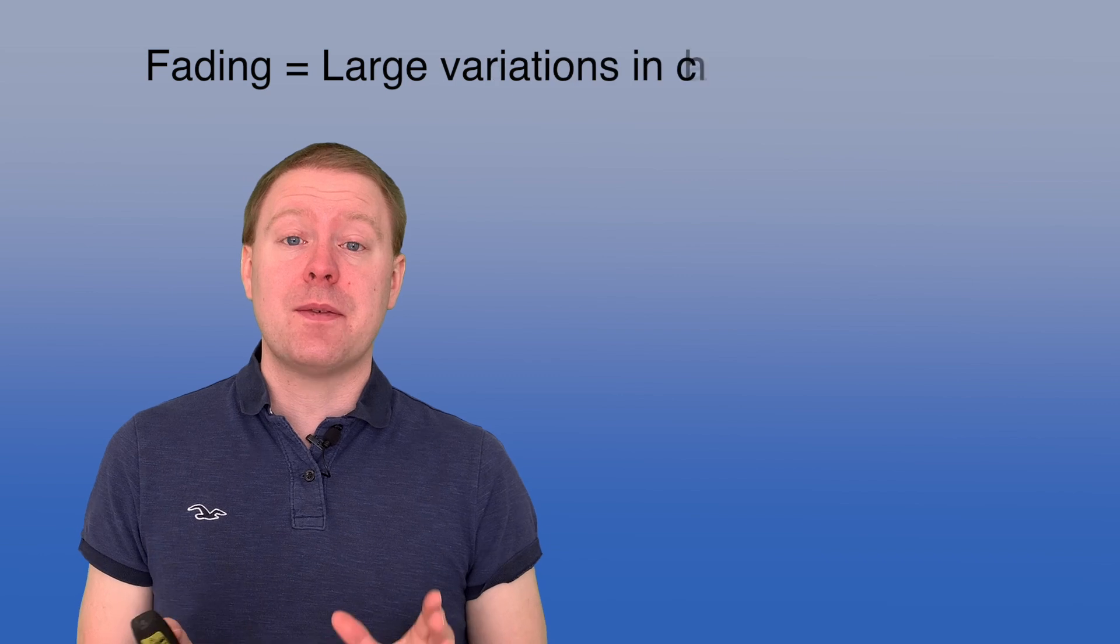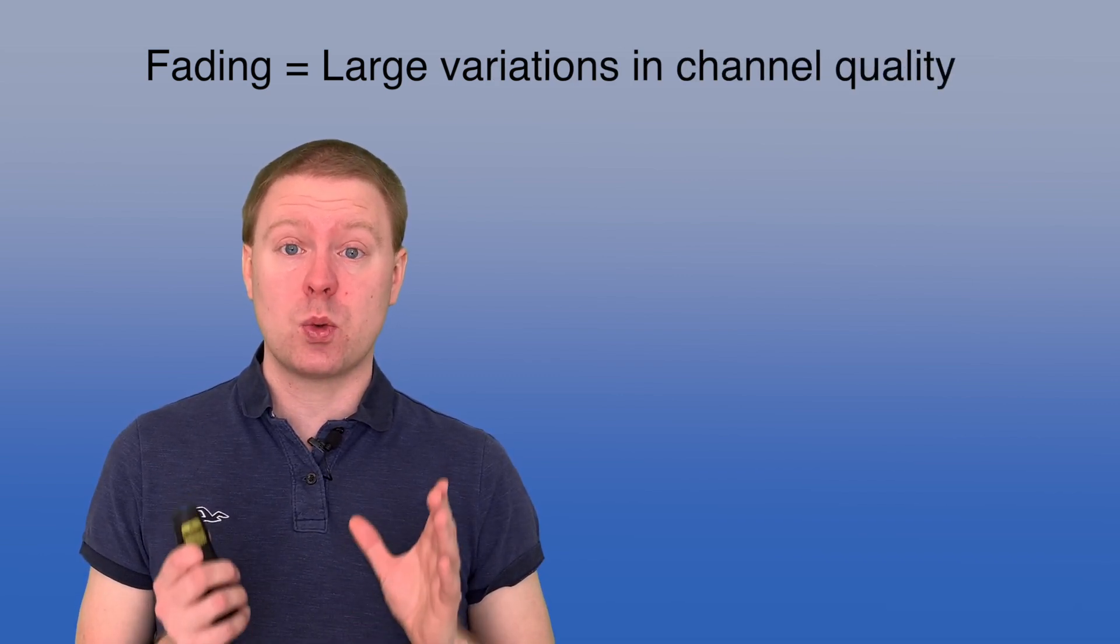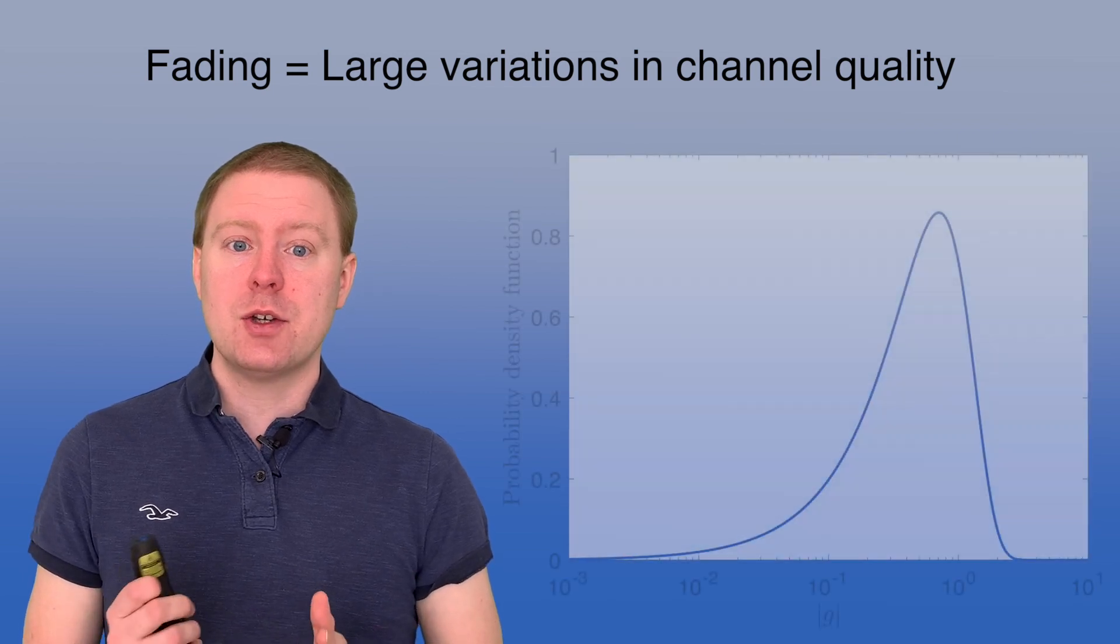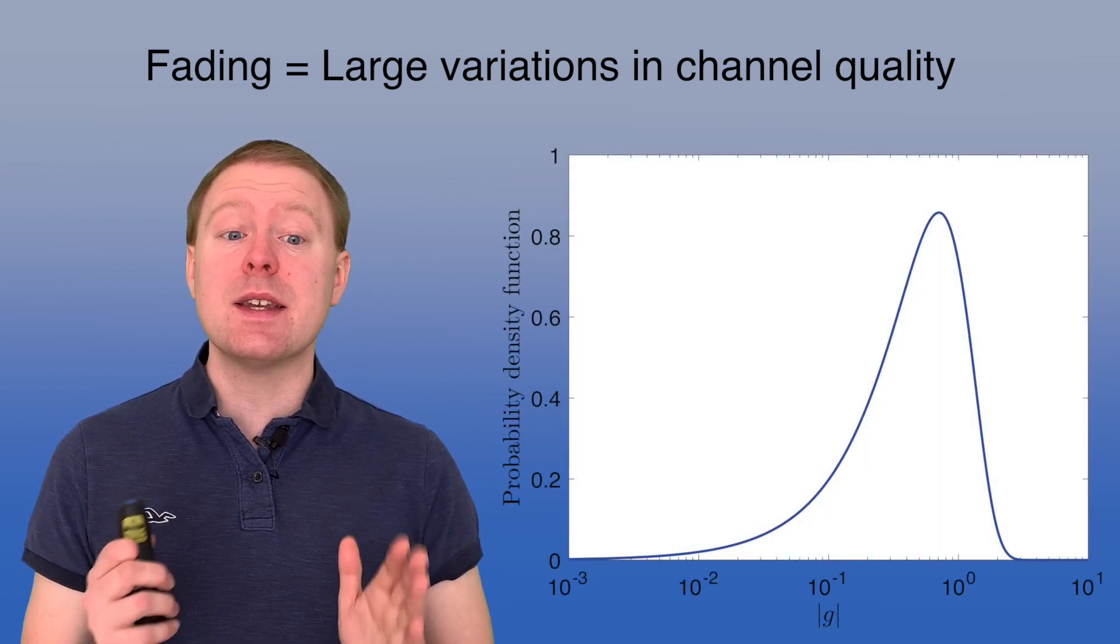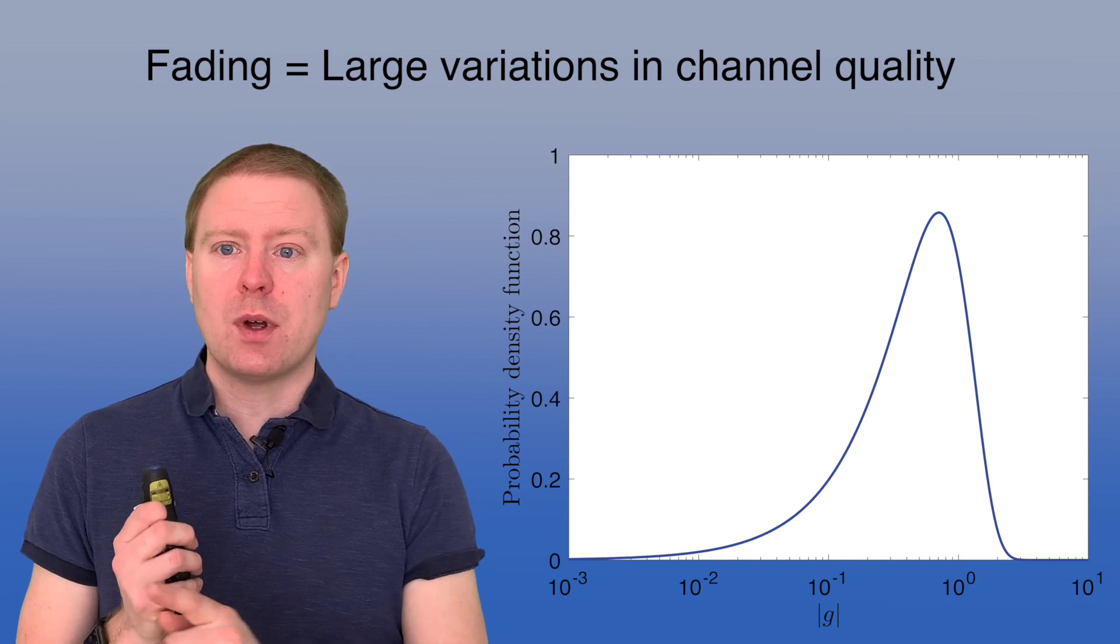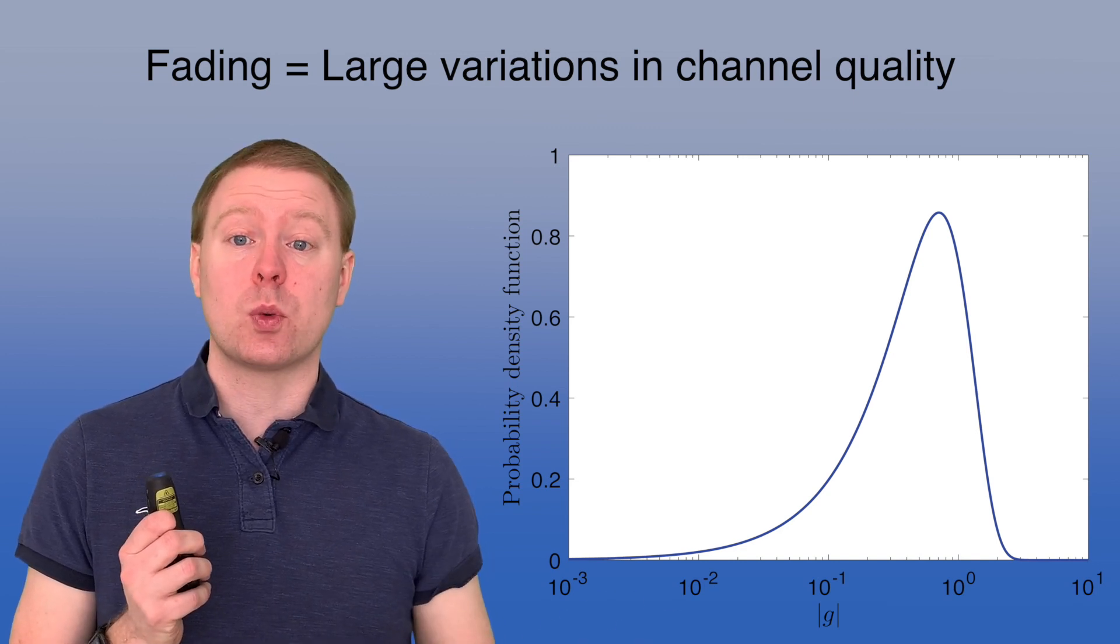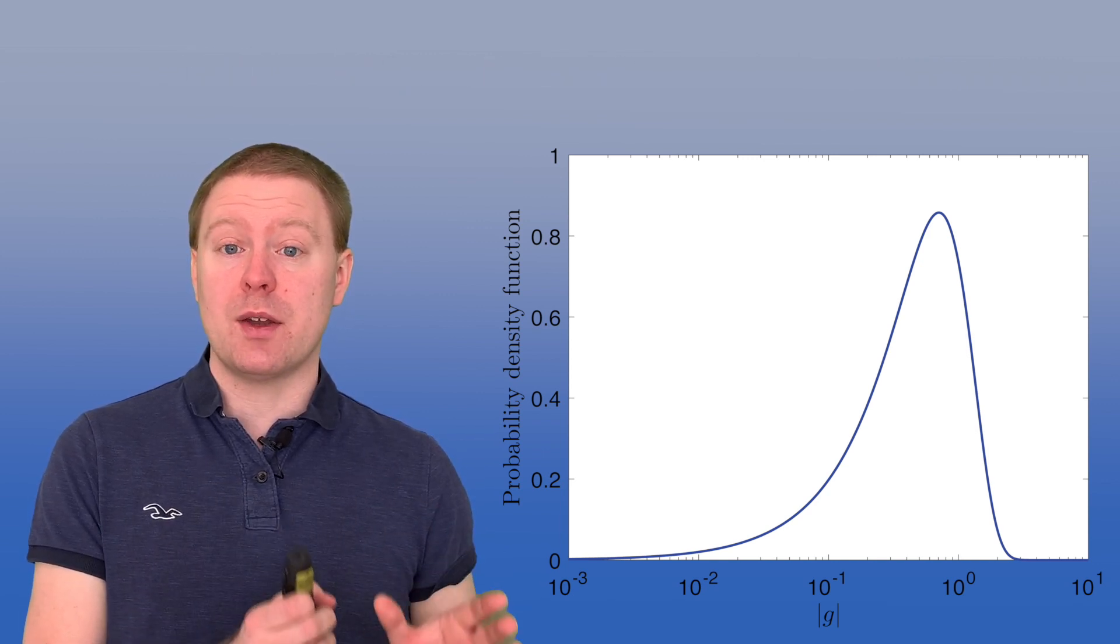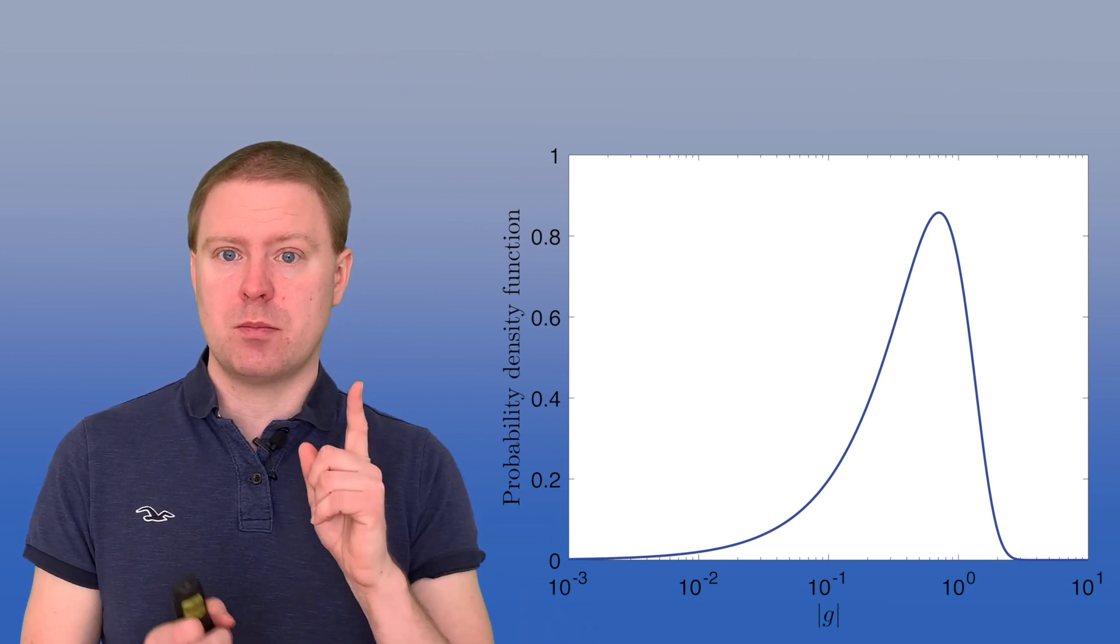The word fading is signifying that we have large variations in the quality of this channel. Sometimes it's good, and sometimes it's bad. And to illustrate that, here is the probability density function of the absolute value of G. And we have a horizontal axis with logarithmic scale. And most of the probability mass is around 10 to the power of 0 here, which is equal to 1.